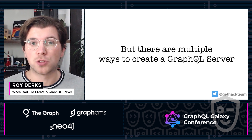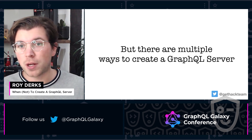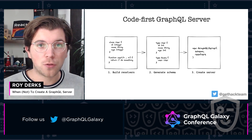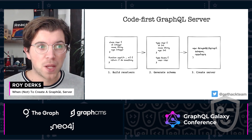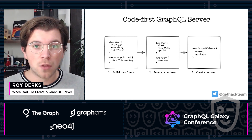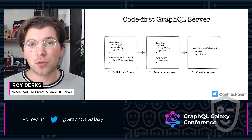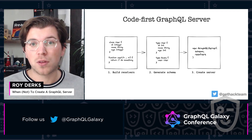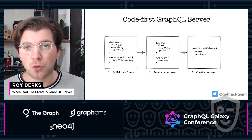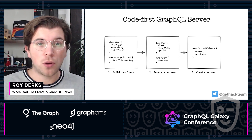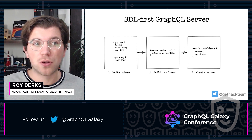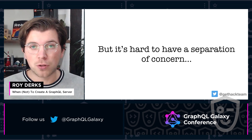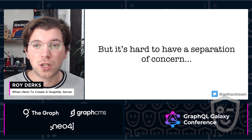There are multiple ways to create a GraphQL server, and there is no single correct way. The first pattern is a code-first GraphQL server. With code-first, you always start by writing resolvers. These resolvers usually use classes or, if you're using TypeScript, they'll use the TypeScript type system to define the return types of those resolvers. Based on that, a code-first GraphQL server generates its schema from the resolvers and then creates a server for you. The upside is you can do everything programmatically. The downside is there's very little separation of concern — your schema gets created from the resolvers, so you don't have full control over how the schema will actually look in the end.